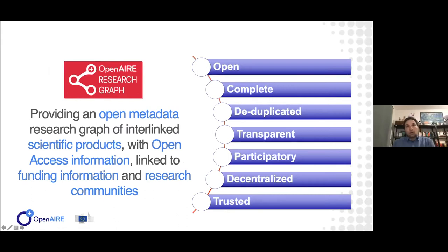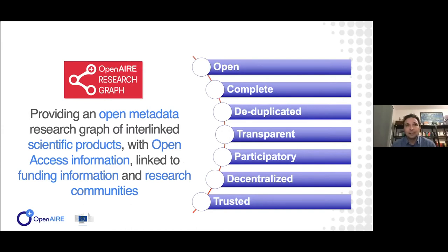At the core of the services, we are building the Open Air Research Graph. It should be intended as a large knowledge graph of open metadata, which contains information about scientific products — publications, datasets, software, other products — how these are related and linked with each other, and also linked with funding information where this is made available or where we can infer this information, as well as research communities.